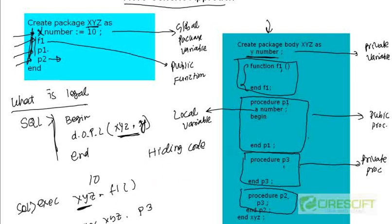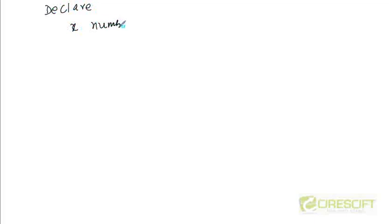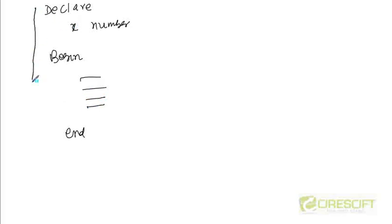Another case to consider: if we write an anonymous PL/SQL block and declare a variable x as a number, that variable x is only valid for the duration of that PL/SQL block execution. Once we reach the end, the variable x is gone.